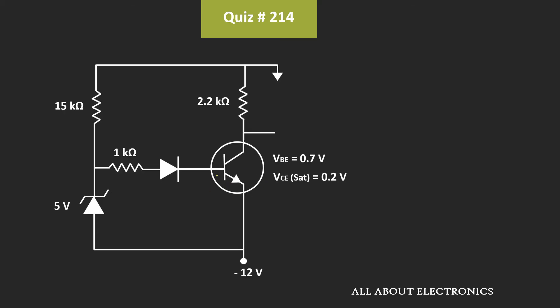First of all, we need to find out whether this transistor is operating in the active region or the saturation region. But initially, let's assume that it is operating in the active region, and let's find out the base current.